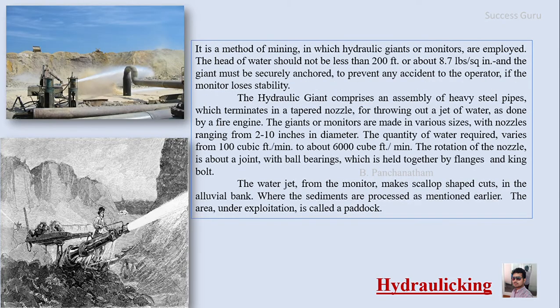The next method is hydraulicking, in which hydraulic giants or monitors are employed. The water head should not be less than 200 feet, or about 8.7 lbs per square inch, and the monitor must be securely anchored to prevent accidents if it loses stability. The hydraulic giant comprises an assembly of heavy steel pipe terminating in a tapered nozzle that throws a jet of water, similar to a fire engine. Monitors are made in various sizes with nozzles ranging from 2 to 10 inches in diameter. Water requirement varies from 100 to 6,000 cubic feet per minute depending on sediment strength. The nozzle rotates on a joint with ball bearings held together by flanging and a king bolt. The water jet makes scallop-shaped cuts in the alluvial banks.